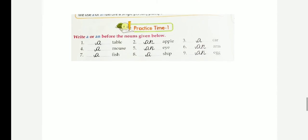Take the next exercise, Practice Time 1. Write 'a' or 'an' before the nouns given below. Dash table, a table. Second one, dash apple, an apple. Dash car, a car. Dash mouse, a mouse. Dash eye, an eye. Dash arm, an arm. Dash fish, a fish. Dash ship, a ship. Dash egg, an egg.